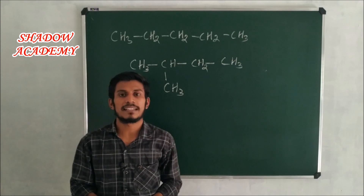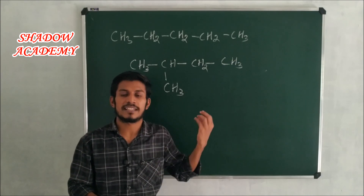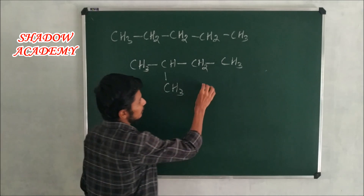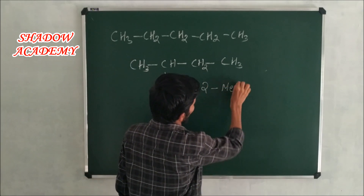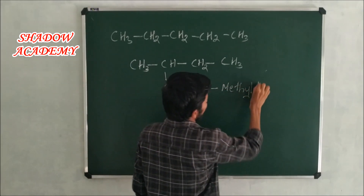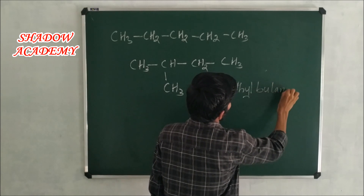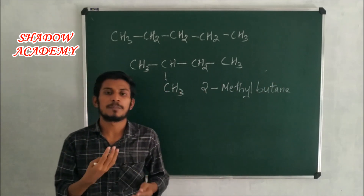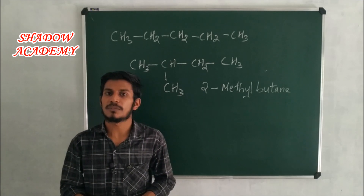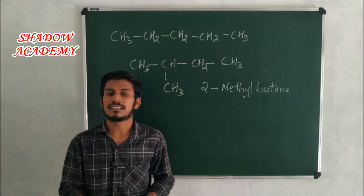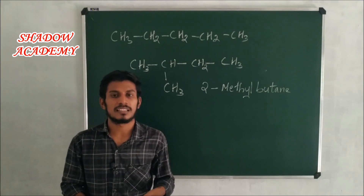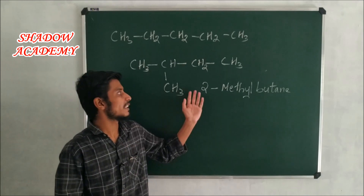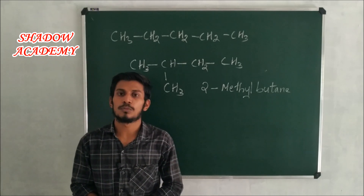What kind of pentane molecule is this? This is a chain isomer. The IUPAC name for this structure is 2-methylbutane. I have 2 videos on IUPAC nomenclature — the link is in the description.